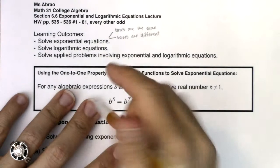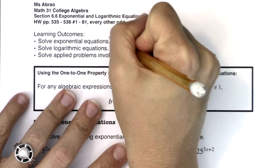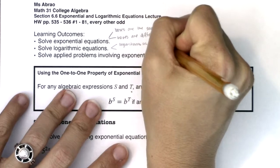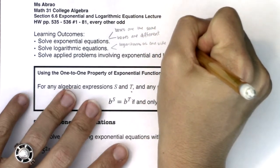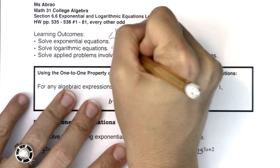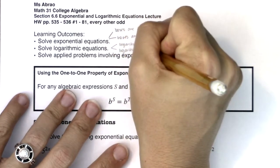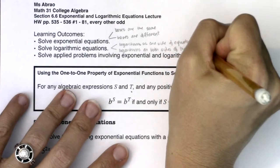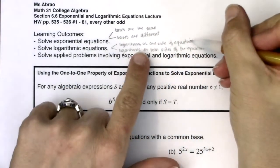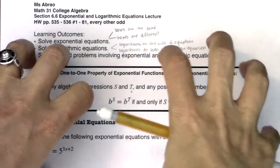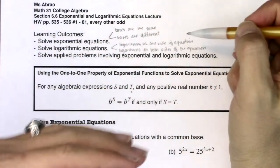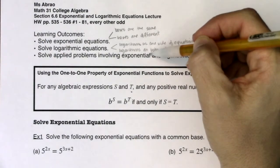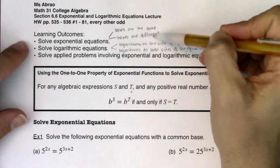The same holds true for logarithms, but the two variations are: we'll have logarithms on one side of the equation, and then there are logarithms on both sides of the equation. We have a certain technique for when logarithms are just on one side, and a certain technique when there are logarithms on both sides. So if we zoom out, there are going to be four different types of problems — four different techniques. Two are for exponential equations, two are for logarithms.